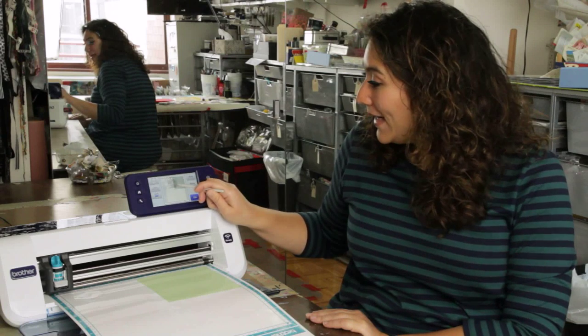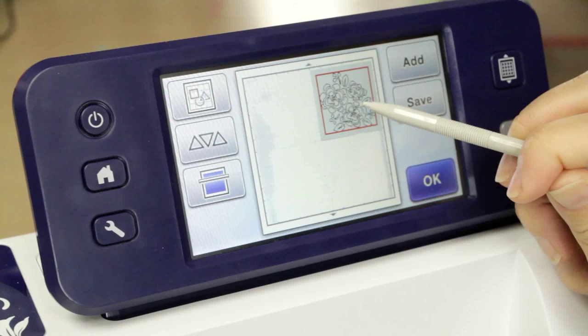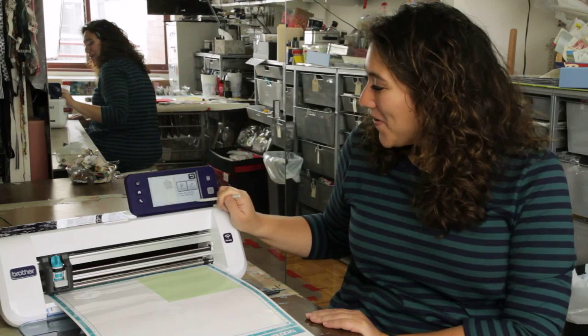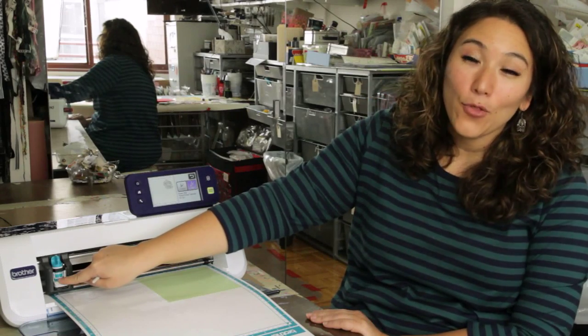Okay, so once it comes up I can drag it onto my stencil material. You do want to leave a small border all the way around to give it enough room to cut. Then I'm ready to hit okay and cut, and you'll notice that I have my blade set at a three, which is what's recommended to cut through just the stencil material and not the whole thing.